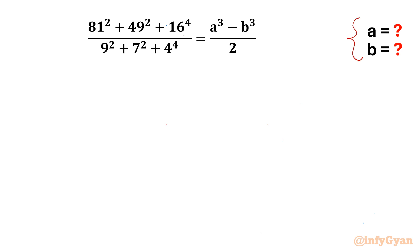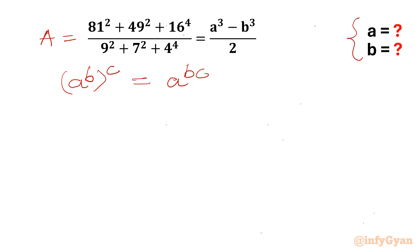Let's get started by considering this equation equal to A. Now I can use the most powerful exponential property, which is (a^b)^c. We can write this as a^(b×c), or equivalently as (a^c)^b. Let us apply this to our given equation.